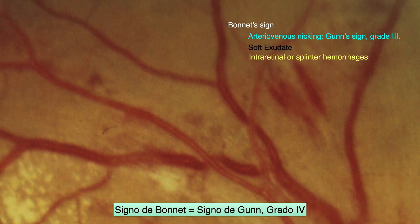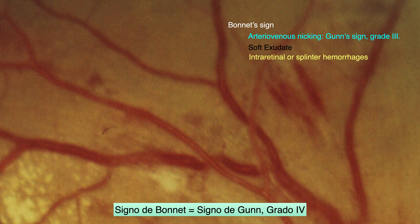Bonnet sign is equivalent to Guntz sign grade 4. In Guntz classification, when a pathological grade 3 arteriovenous crossing is also associated with a cotton wool exudate and hemorrhage or retinal hemorrhages, it is considered a grade 4. The same type of pathological arteriovenous crossing without bleeding or associated soft exudate would be a grade 3 Guntz sign, while if both are associated, the crossing would then be grade 4. As you can see, bonnet sign is incorporated into Guntz classification.